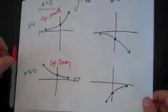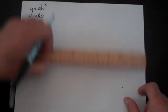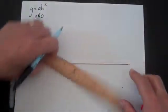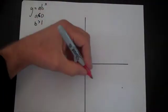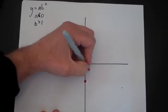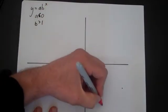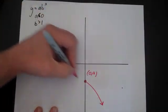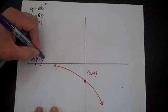For y equals a times b to the x with a negative and b greater than 1: this is an exponential growth problem since b is greater than 1, but a starts out negative. The initial value is (0, a), which is negative. Since a negative number grows exponentially, it becomes ever more negative as x increases. As x becomes negative, y decreases toward the asymptote at y equals 0.